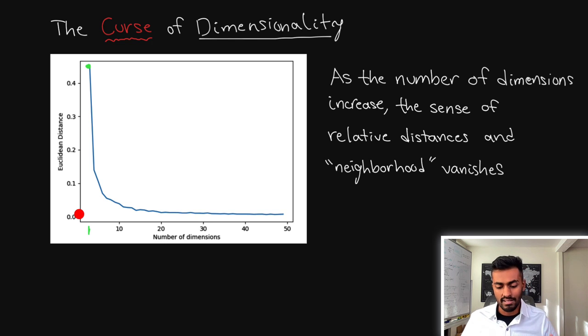In more plain English, this means that as the number of dimensions increase, the sense of relative distances and neighborhoods vanish. If there's a point A you cannot determine whether it is closer to point B or point C when the dimensions are extremely high. This is the curse of dimensionality.